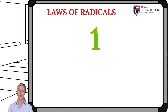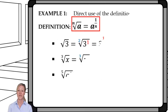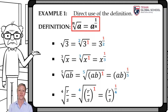The first law of radicals indicates that the nth root of a is equivalent to raising the base a to 1 over n, as long as it is defined. For example, the square root of 3 can be represented as 3 raised to 1 half. Recall that base 3, by definition, is raised to the first power and the square root index is 2.